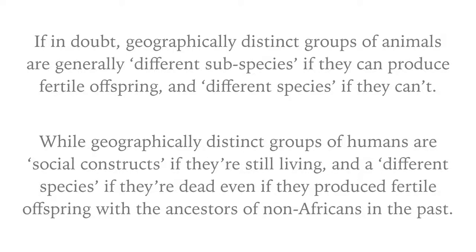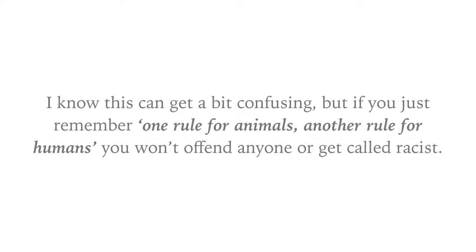So if in doubt: geographically distinct groups of animals are generally different subspecies if they can produce fertile offspring, and different species if they can't. But geographically distinct groups of humans are social constructs if they're still living, and a different species if they're dead — even if they produced fertile offspring with the ancestors of non-Africans in the past. Just remember one rule for animals and another rule for humans, and you won't offend anyone or get called racist.